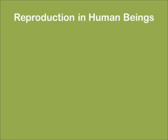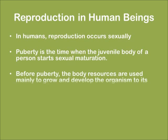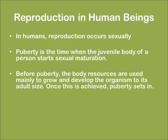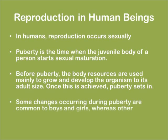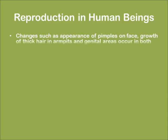Reproduction in human beings. In humans, reproduction occurs sexually. Puberty is the time when the general body of a person starts sexual maturation. Before puberty, the body resources are used mainly to grow and develop the organism to a stable size; once this is achieved, puberty sets in. Changes such as the appearance of pimples on the face, growth of thick hair in the armpits, and genital areas occur in both boys and girls.